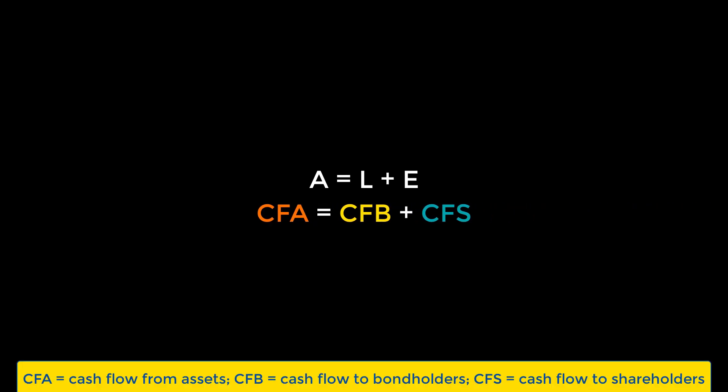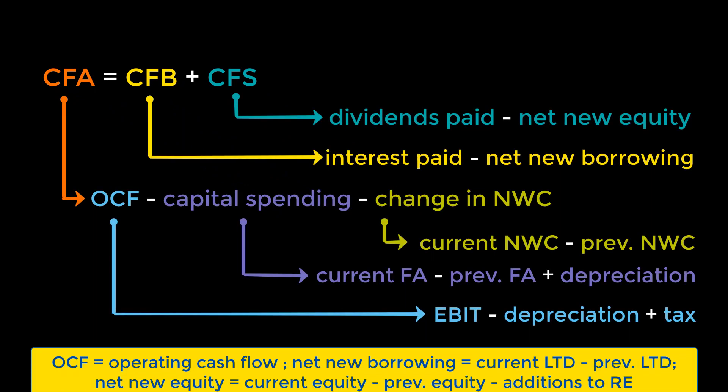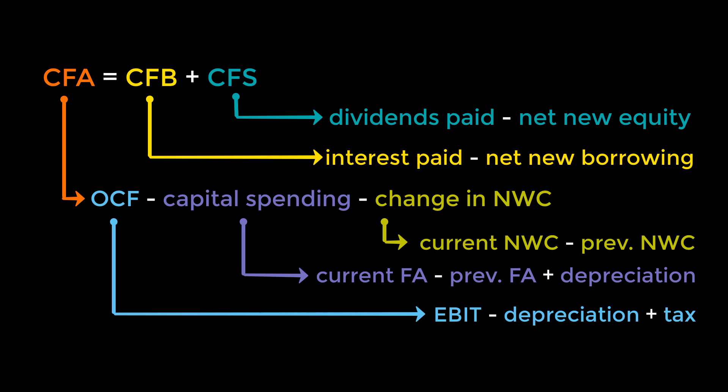So how do we calculate cash flow? The cash flow identity is strikingly similar to the statement of financial position identity that we saw earlier. Cash flow from assets equals cash flow to the bondholder plus cash flow to the shareholders. Getting each of these amounts is a simple affair — it only requires adding and subtracting the appropriate values from the financial statements we discussed. Take note of this tree of formulas on how to calculate the various components of cash flow, and we'll explore how it works in practice by doing a few problems.